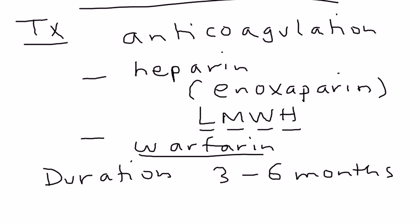Sometimes warfarin is given for life — for example, if the patient has recurrent DVTs or a known hypercoagulability from Virchow's Triad that is not modifiable. Since they will always have hypercoagulability, they need to be on warfarin for life.